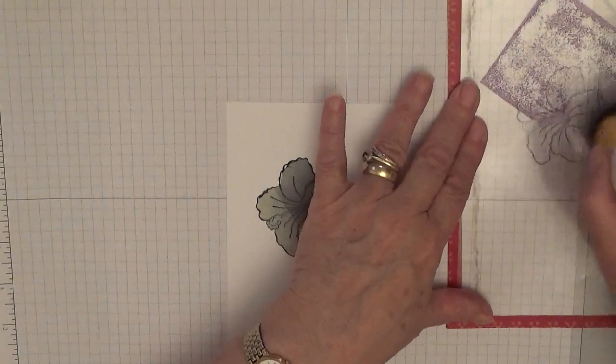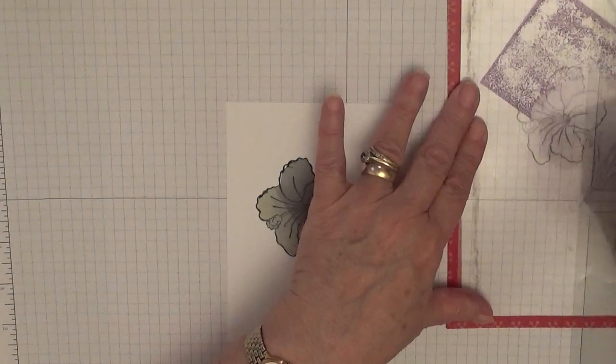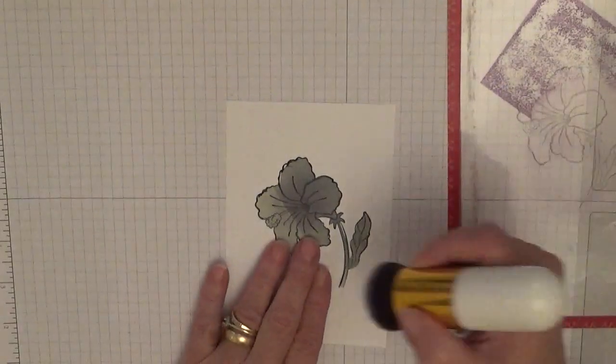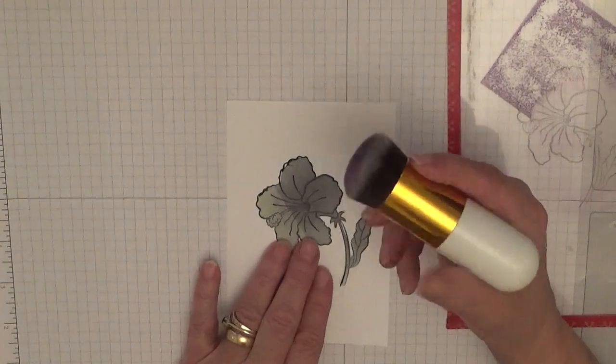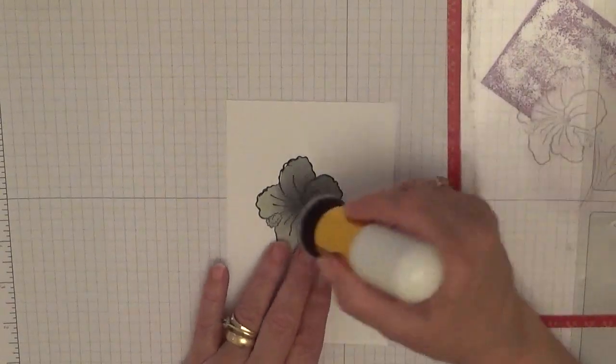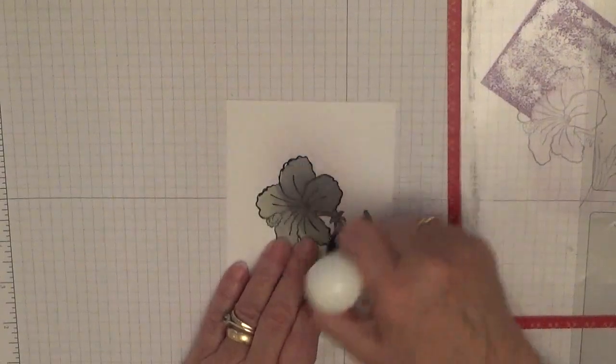For those of you who haven't seen a video with me using this brush, I got them out of Amazon, pack of three, I think they're about five pounds I think. Right, and what I do is I just start off in the middle of the flower and go round.